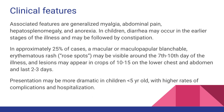Hepatosplenomegaly and anorexia may also occur. Diarrhea usually occurs in younger children while constipation occurs in older children. In about 25 percent of cases, a macular or maculopapular rash called rose spots appears around the 7th to 10th day of illness, in crops of 10 to 15 lesions on the lower chest and periumbilical region, lasting 2 to 3 days.